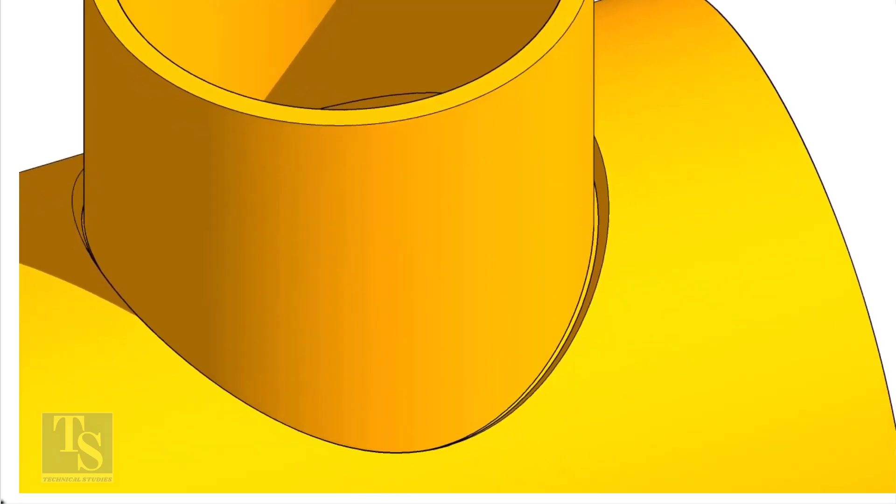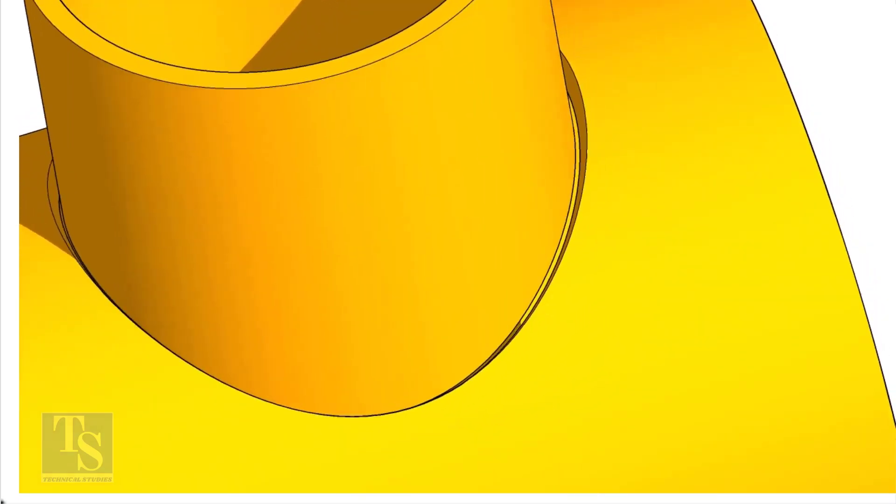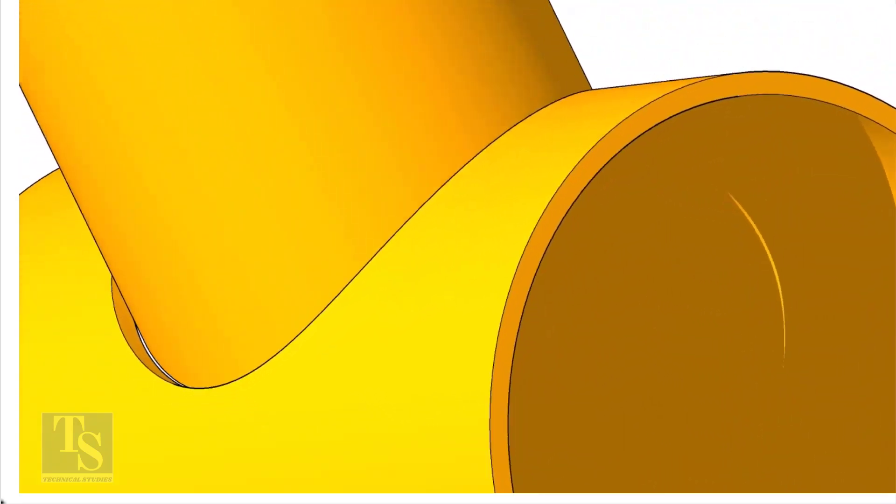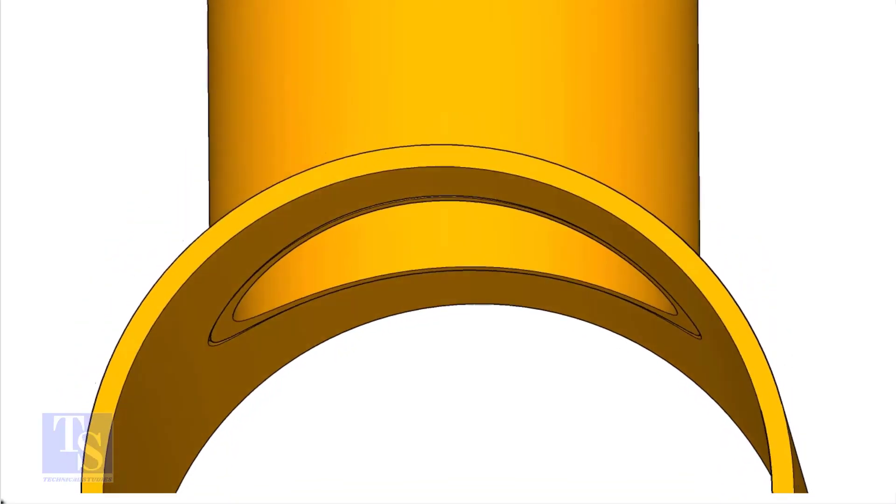On the branch pipe, there is no bevel preparation, but the cut-back cut is done. The end of the branch is level with the inside diameter of the header pipe.